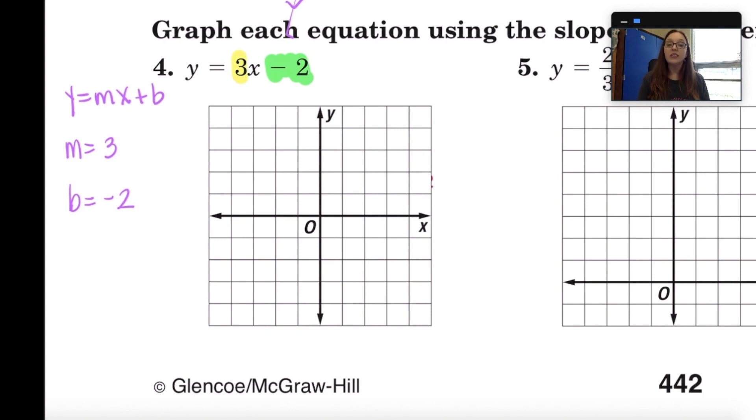So now that I've identified the slope and the y-intercept, all I need to do is follow the same procedure that I did before. So start off by using your y-intercept as your starting point. So I'm going to find negative two on the y-axis and plot that point. And then my slope is three, which we want to write that as a fraction.